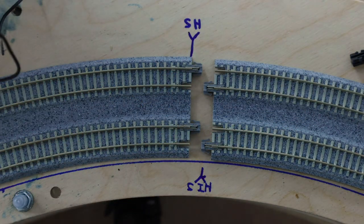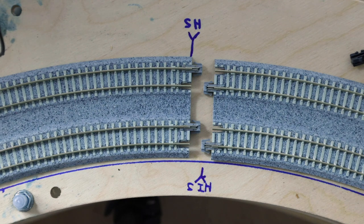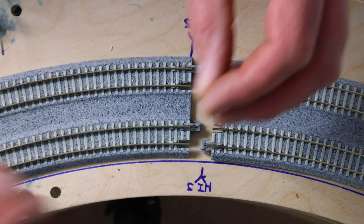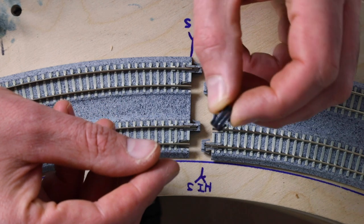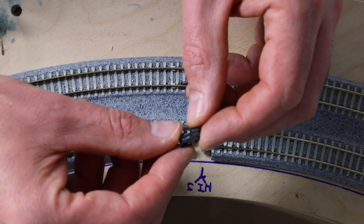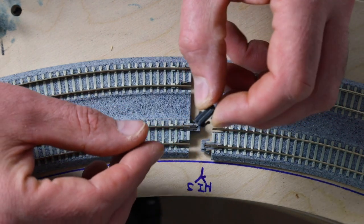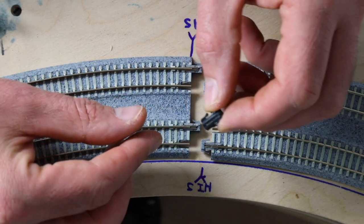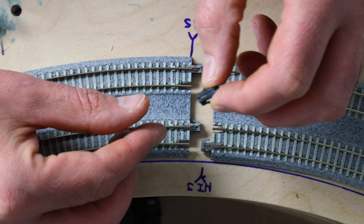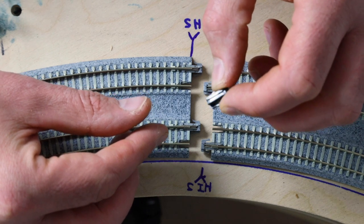Because I'm having block detection on my layout and helix, I've got hold of these Kato insulating uni joiners. That's a uni joiner without a metal joiner in it. It's just a piece of plastic that physically holds the tracks together.